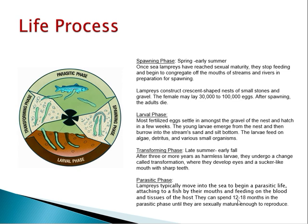They spend 12 to 18 months in the parasitic phase until sexually mature, then migrate back to rivers. Semelparity and anadromous migration — from sea to river — are important distinguishing features of Petromyzon.